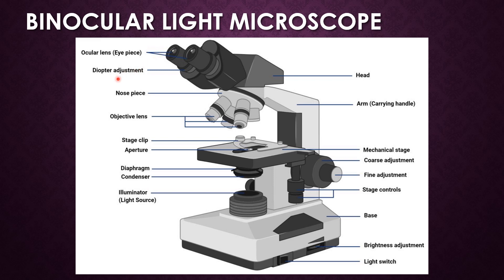Next is the diopter adjustment, which is used to change the focus of one eyepiece to compensate for the difference in vision between the two eyes. These are all the basic parts of the microscope.